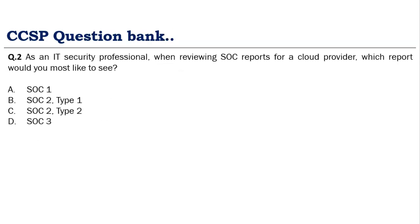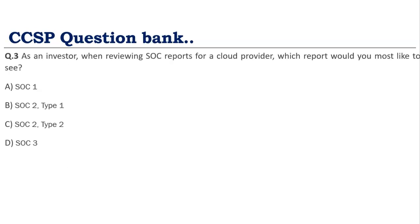Second question: as an IT security professional reviewing SOC reports for a cloud provider, which report would you most like to see? If nothing specific is stated and security is the focus, always go with SOC 2. If the options include Type 1 and Type 2, always choose SOC 2 Type 2. SOC 2 Type 2 is the baseline report to review from a security perspective.